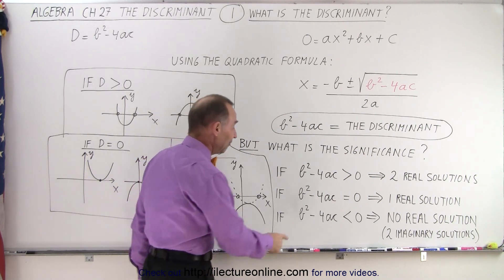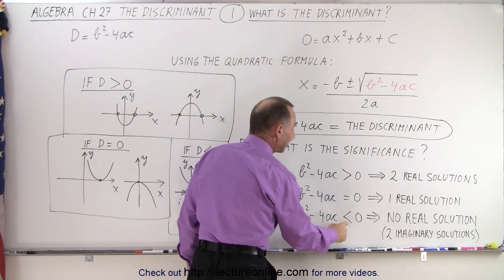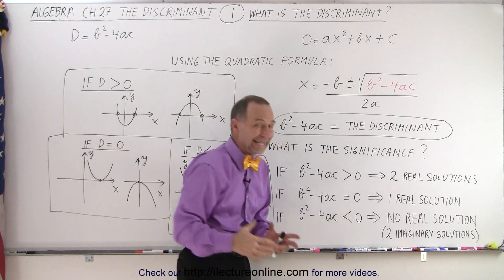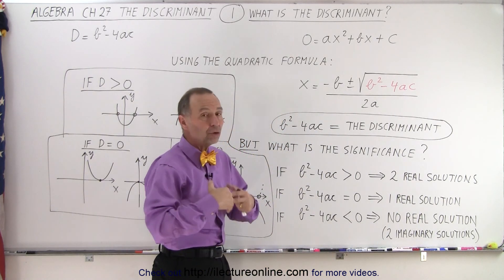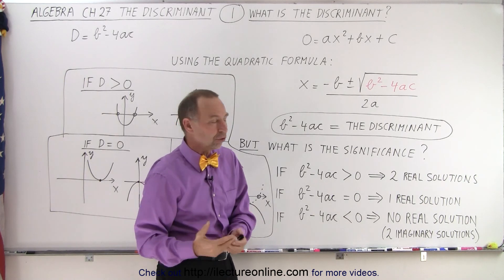And if b² - 4ac is less than zero, in other words a negative number, then there are no real solutions to that quadratic equation. There's only two imaginary solutions.